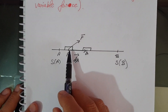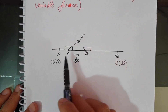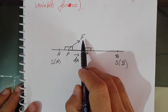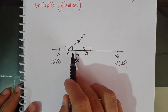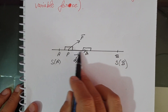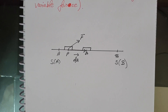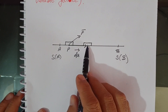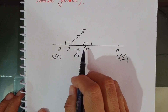At any instant, suppose the body is at point P where the force on the body is F. Under the action of this force, suppose the body undergoes an infinitesimally small displacement PQ, represented by ds. During such a small displacement, we assume that the force remains constant — so during the displacement ds, the force is constant.